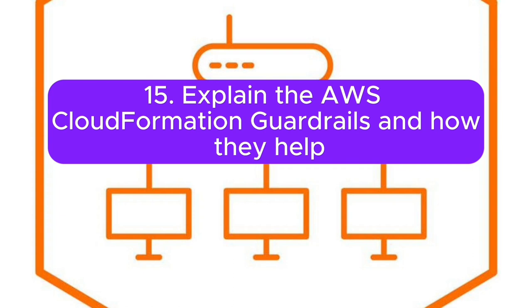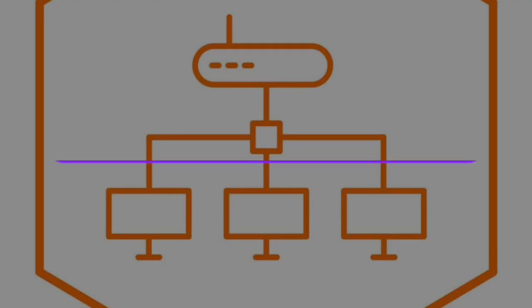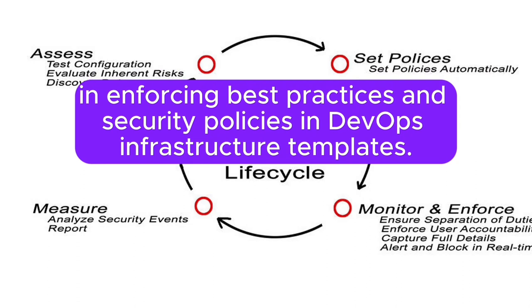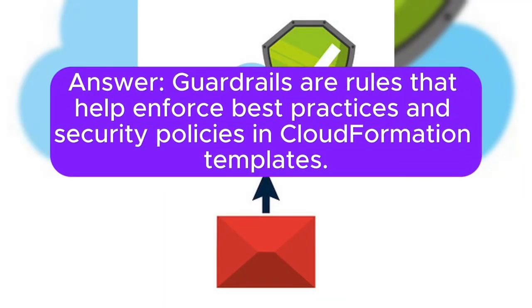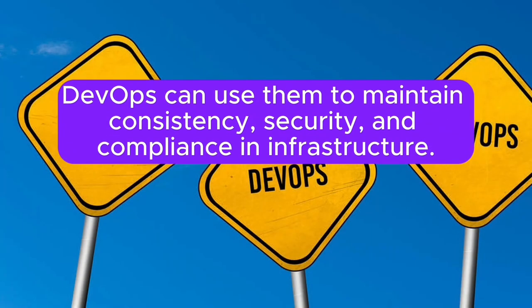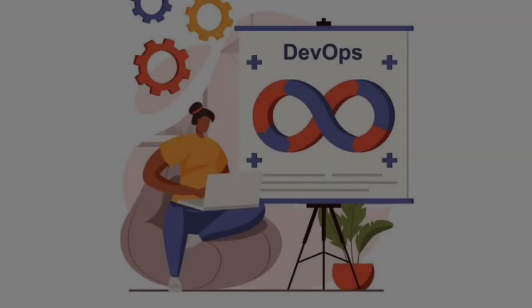Question 15: Explain the AWS CloudFormation guardrails and how they help in enforcing best practices and security policies in DevOps infrastructure templates. Answer: Guardrails are rules that help enforce best practices and security policies in CloudFormation templates. DevOps can use them to maintain consistency, security, and compliance in infrastructure.